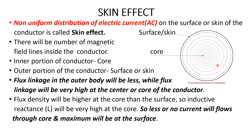Since flux density increases at the core, inductive reactance will be very high at the core of the conductor. Due to less flux density on the surface, inductive reactance will be very less on the surface compared to the core. Therefore, current flow will be maximum at the surface of the conductor and zero or minimum at the core, due to high inductive reactance.